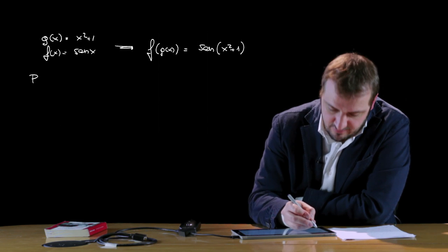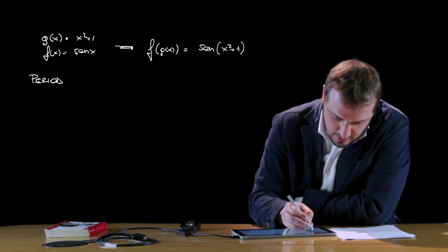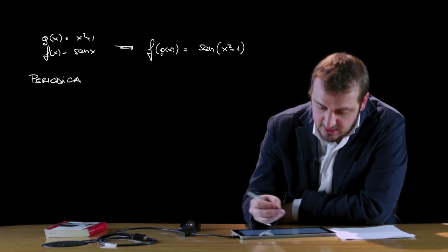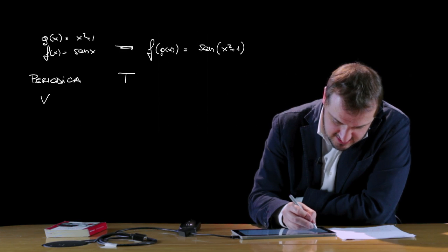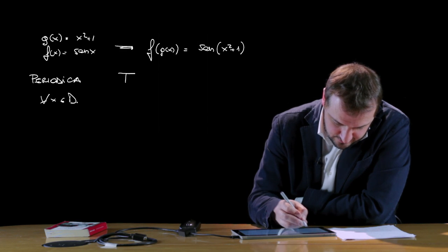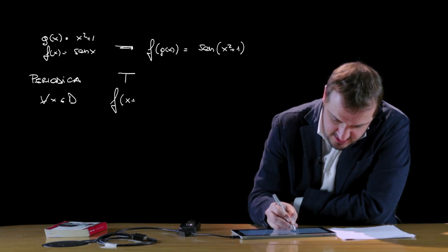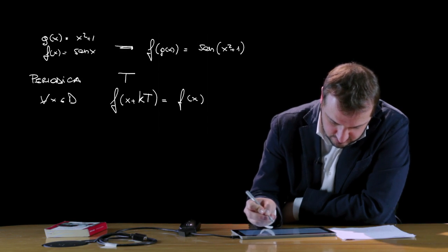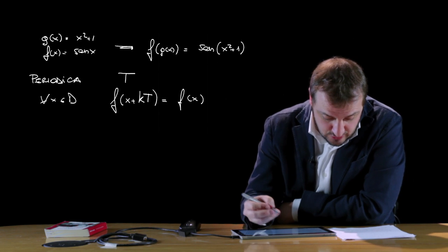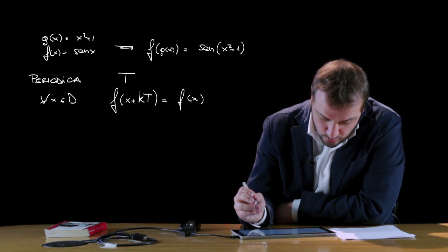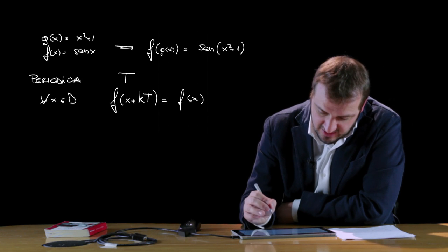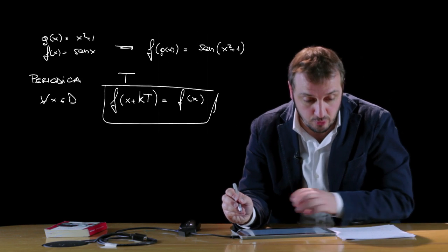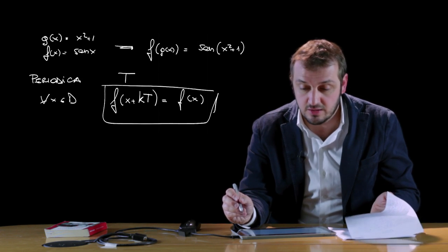L'ultima definizione riguarda le funzioni periodiche. Una funzione si dice periodica di periodo T se per ogni x appartenente al dominio abbiamo che f(x + kT) = f(x), dove k è un valore intero positivo, negativo o nullo, e T rappresenta il minimo numero positivo per cui si verifica questa uguaglianza. T viene detto periodo principale della nostra funzione.